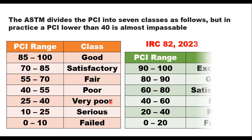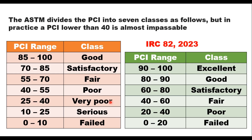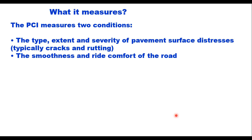IRC 82:2023 has categorized PCI into six categories: 90 to 100 is excellent, 80 to 90 is good, 60 to 80 is satisfactory, 40 to 60 is fair, and below 40 represents poor and failed condition of the road.